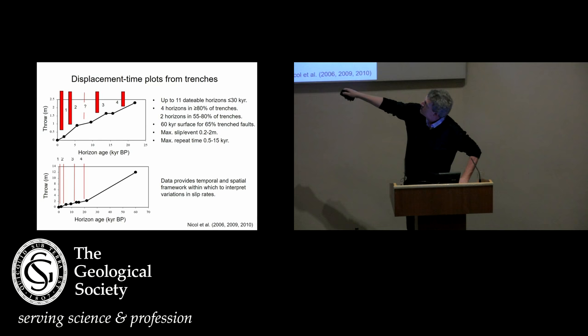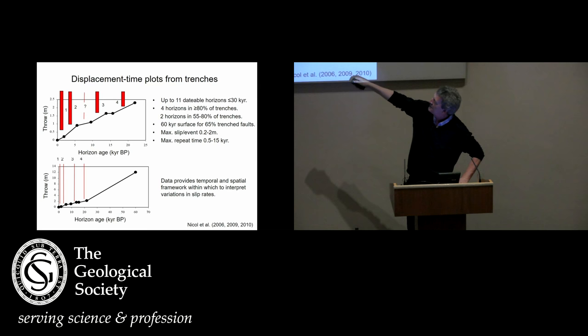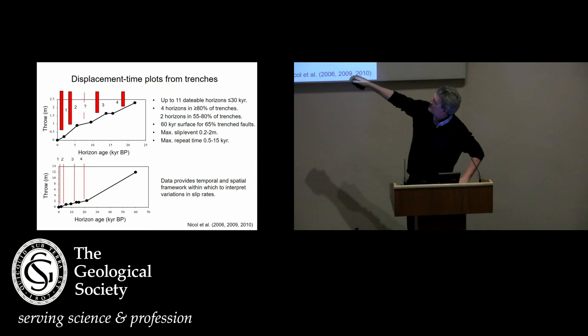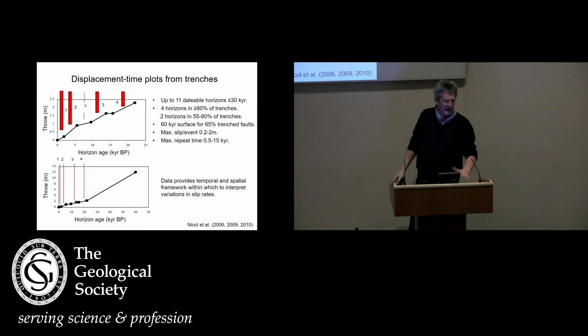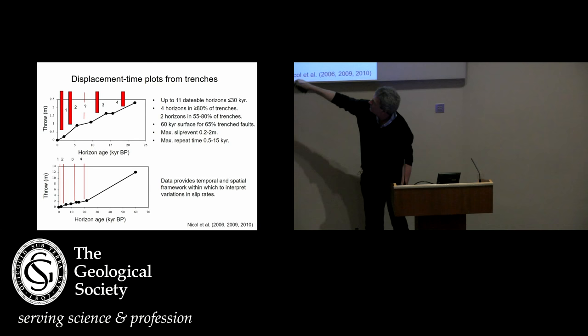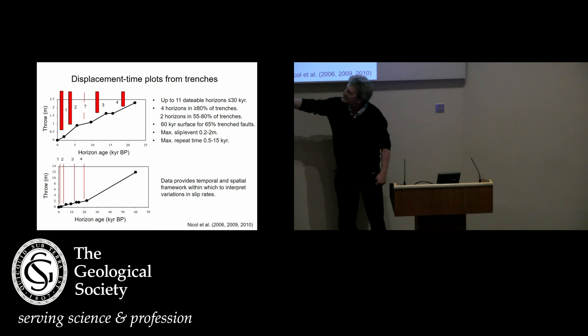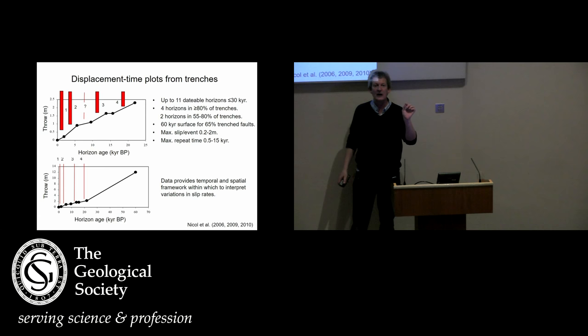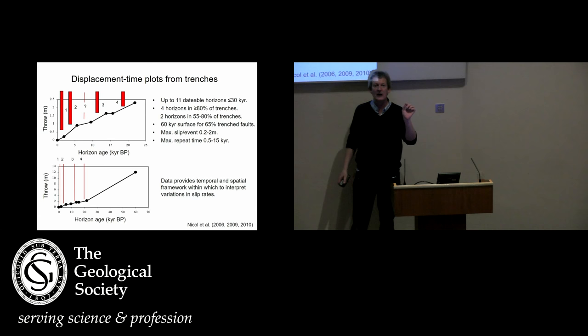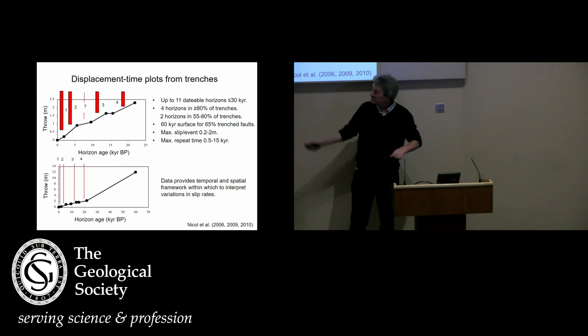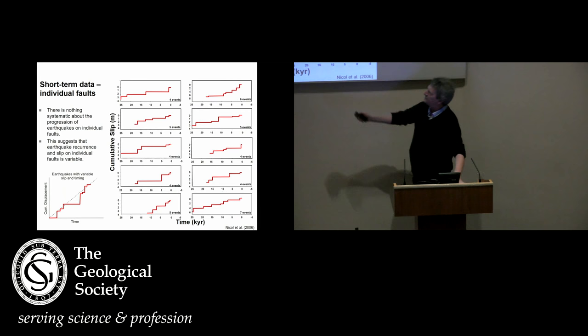This is the vertical displacement against age in a really well-behaved trench. You can see it's actually quite well-behaved with very little jumps. Going back to 20,000 years, there's a really nice trend. But looking at the 60,000-year displacement, the gradient over the longer period is lower than the gradient in the last 25,000 years — meaning this fault has been moving relatively slowly in the last 25,000 years but was moving much quicker over the full 60,000 years. It's slowed down a bit. That's just one — we can look at lots of slip profiles.